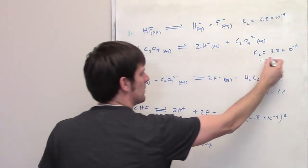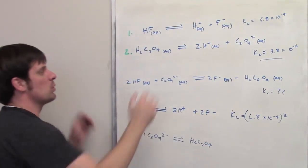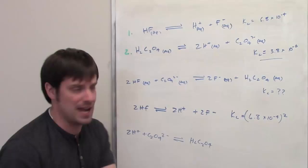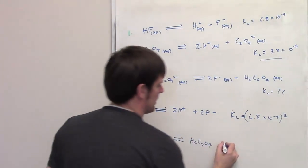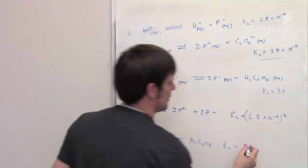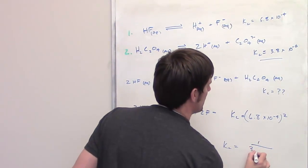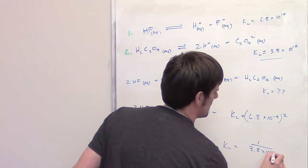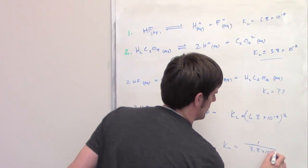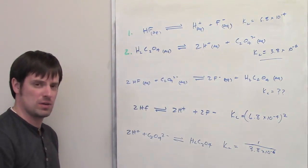What does that do to its equilibrium constant? Well if you reverse a reaction, which you absolutely can, the new equilibrium constant becomes the reciprocal. So it becomes 1 over 3.8 times 10 to the negative 6th. Hopefully you're okay with that.